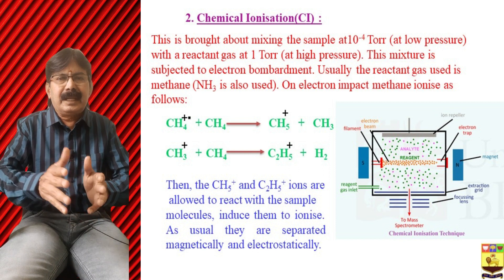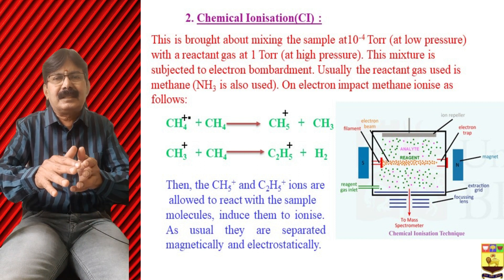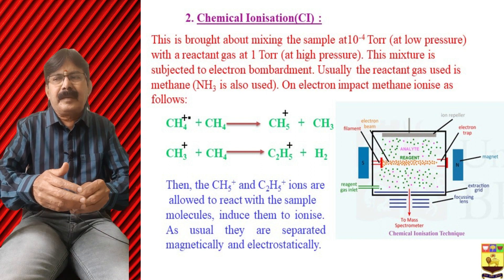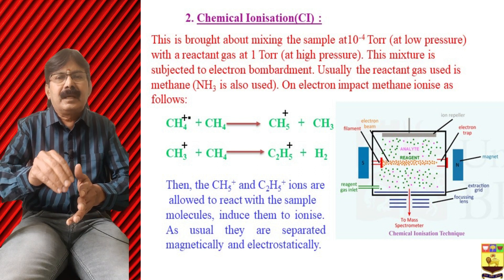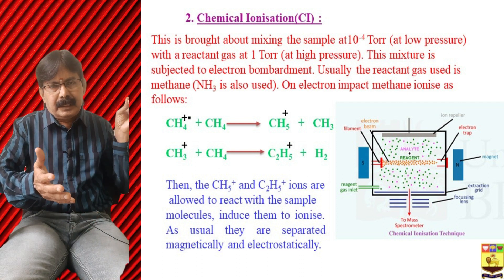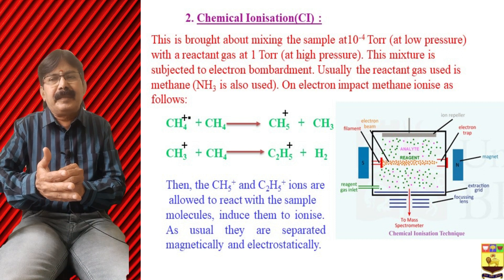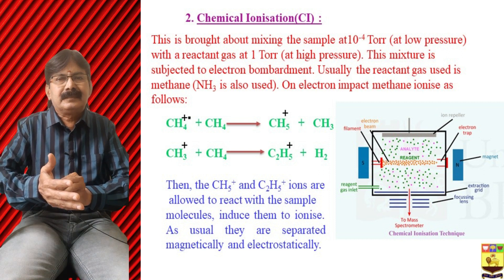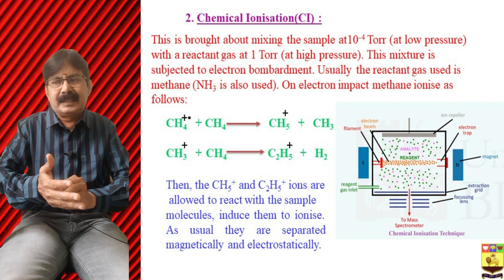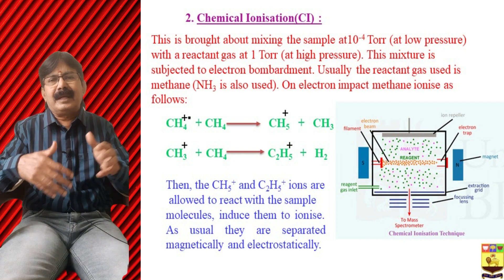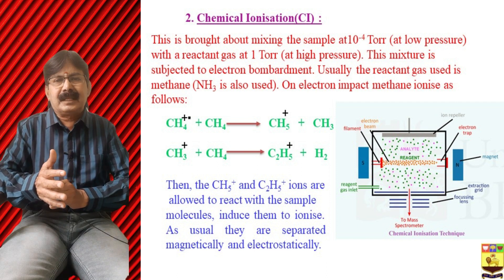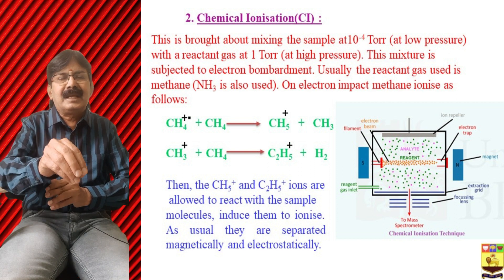The reagent gas — typically methane — on electron impact ionizes to form a molecular ion CH4⁺•. This bombards neutral methane to form CH5⁺, and CH5⁺ bombards another neutral molecule to form C2H5⁺. In the ionic chamber, the CH5⁺ and C2H5⁺ ions are then allowed to react with the sample.